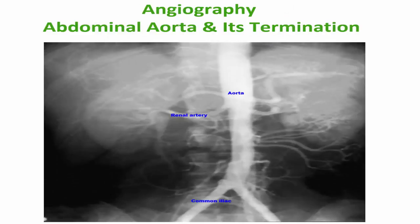Angiography for the abdominal aorta — this is the termination — with radiopaque material injected. We can visualize the abdominal aorta, renal arteries, the bifurcation of the aorta, and the two common iliac arteries.